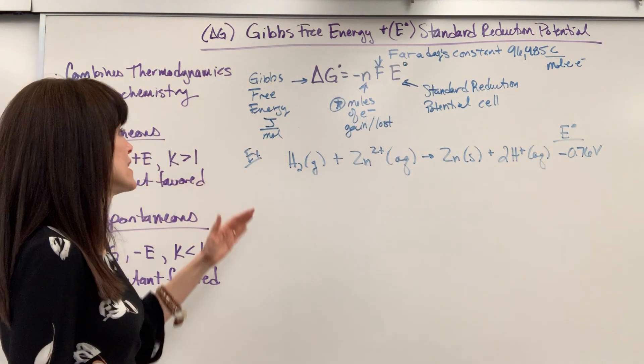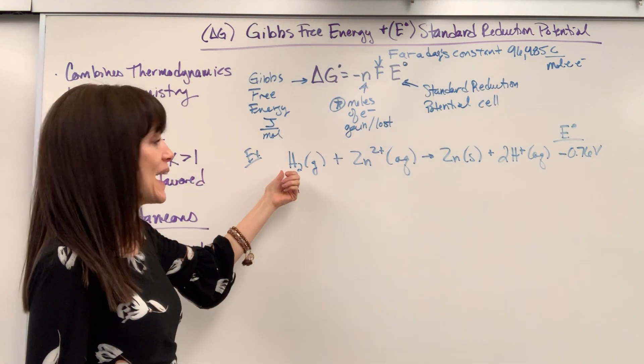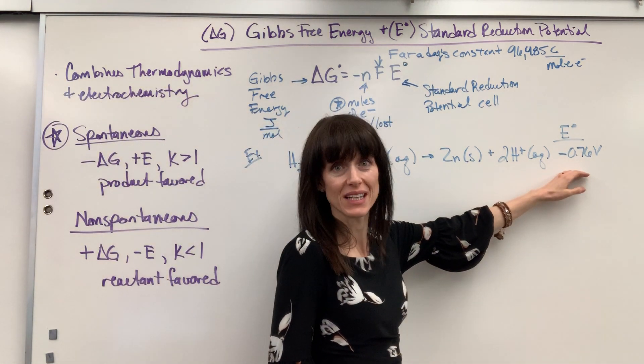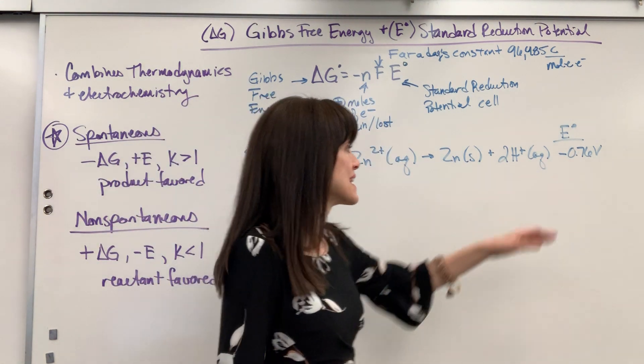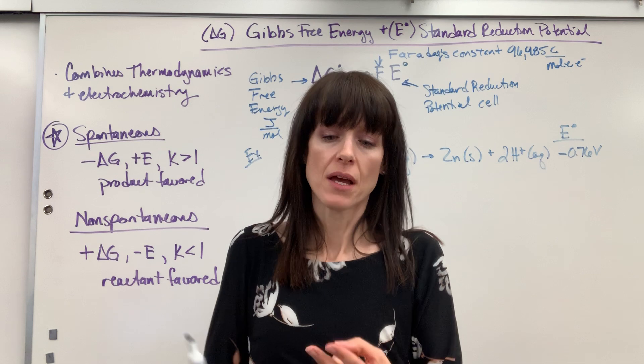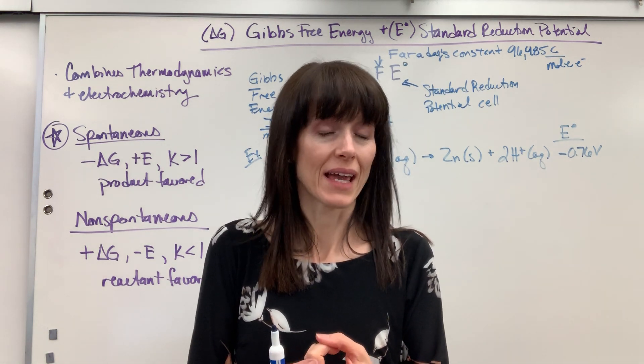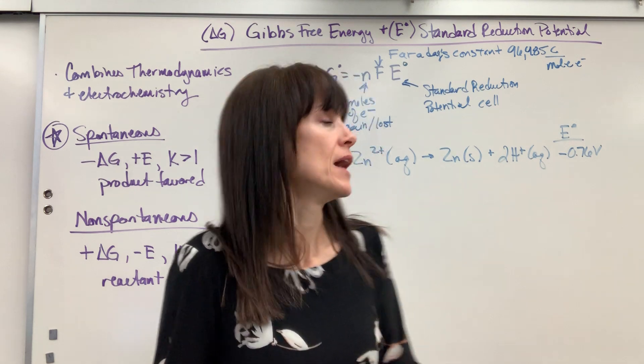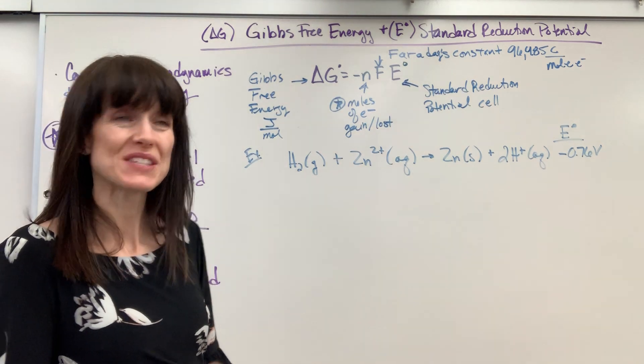I've saved us some steps. Here is our example problem, we're going to have hydrogen with zinc, our standard hydrogen electrode. When we do hydrogen with zinc it gives us negative 0.76, so right away I can answer this. Seeing that that's negative non-spontaneous, I can tell you straight out delta G is going to be positive, K is less than 1, and it's going to be reactant favored.